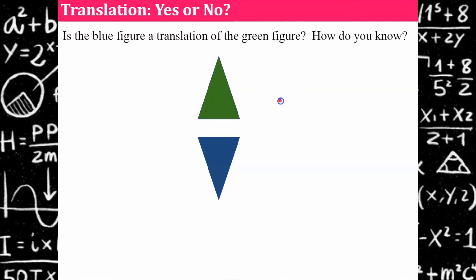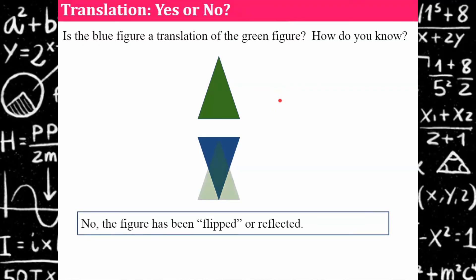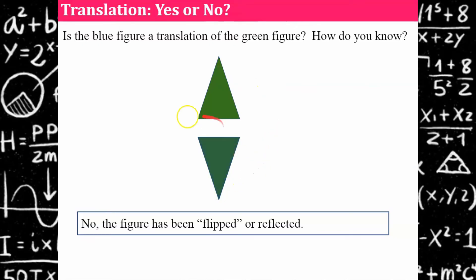The answer is no because the figure has been reflected. Or you could say it was turned, but we can see it has been reflected. It's not a translation because there's nothing we can do to the green figure to slide it to make it overlap — you'd have to turn it or reflect it.